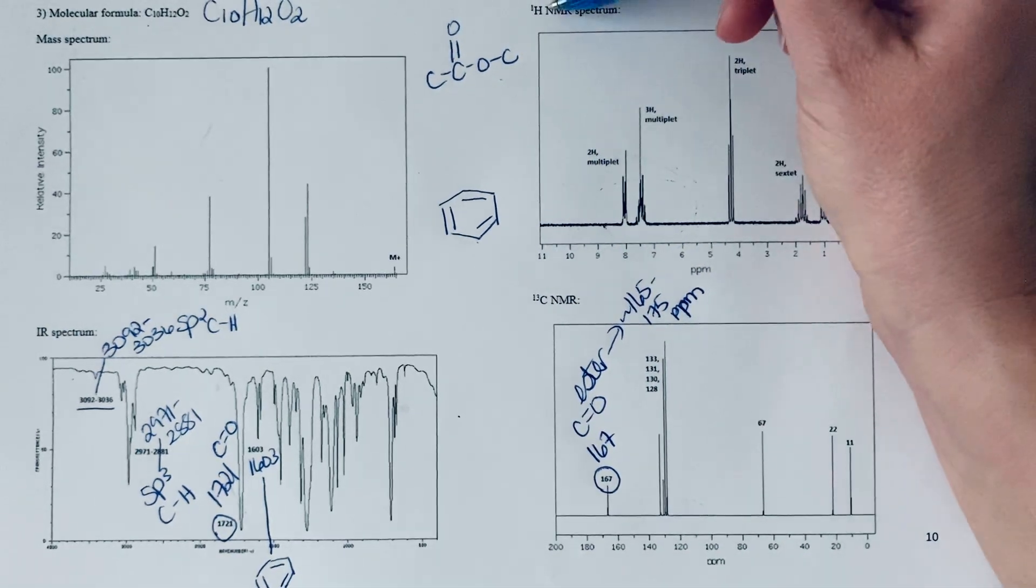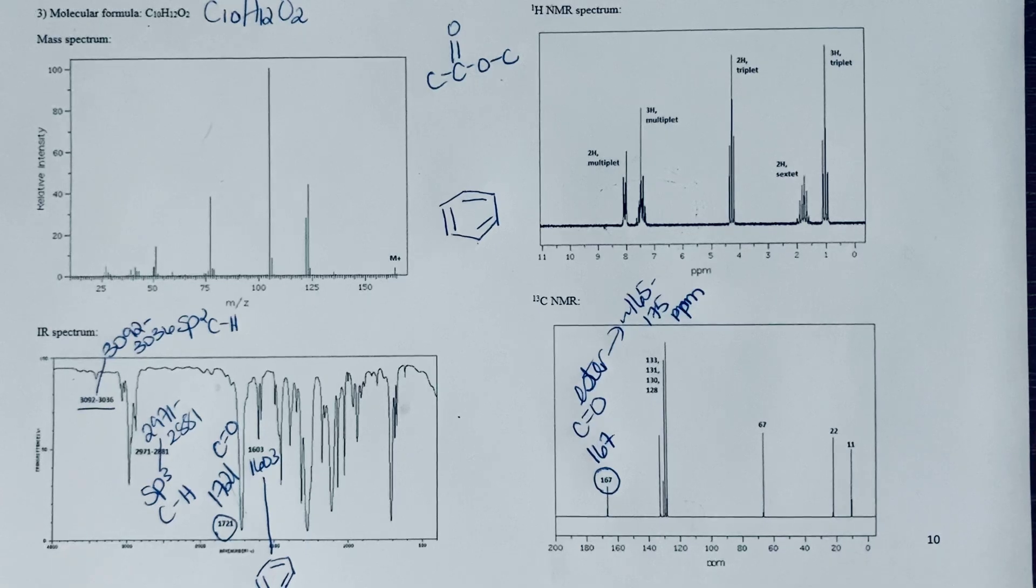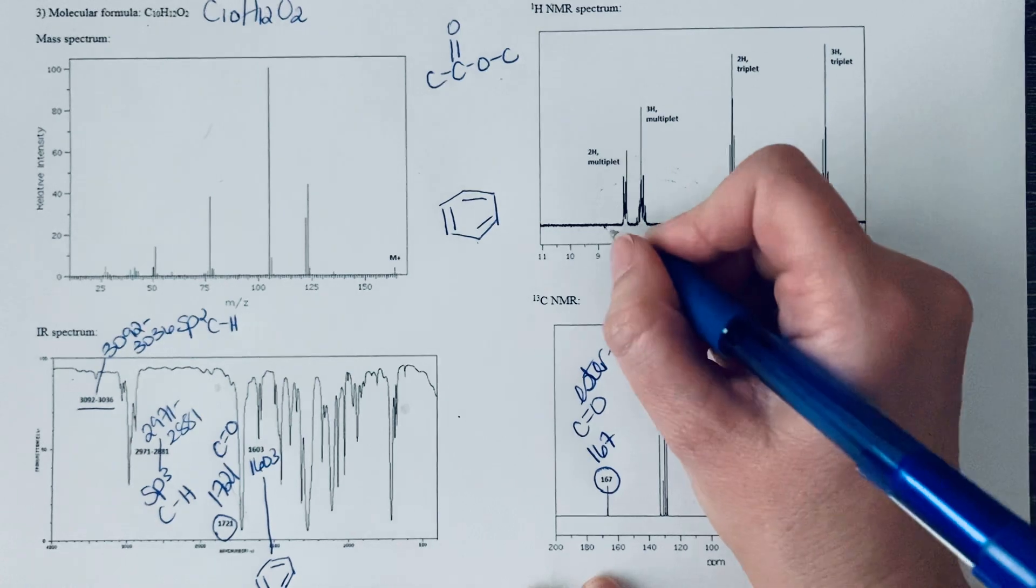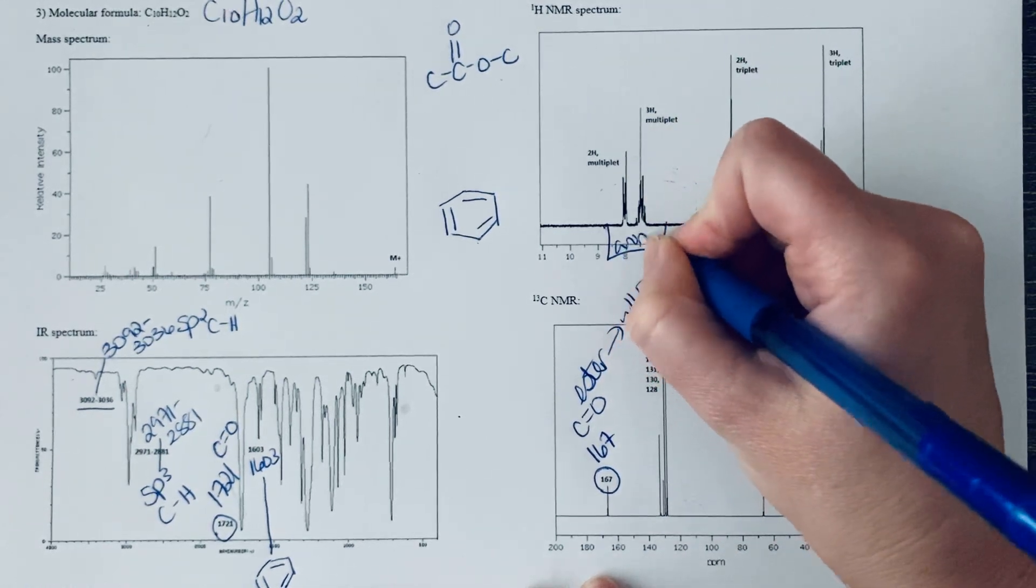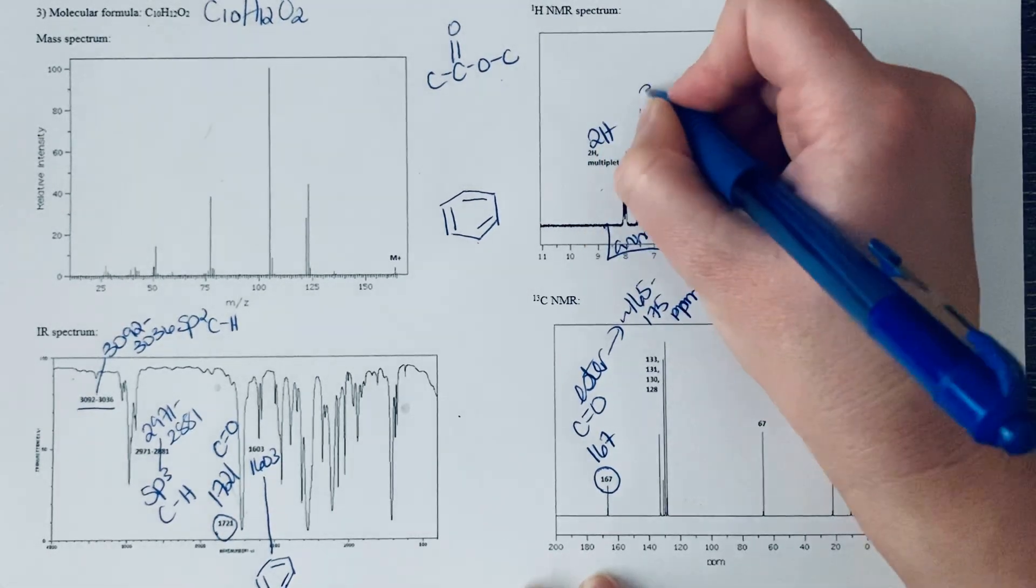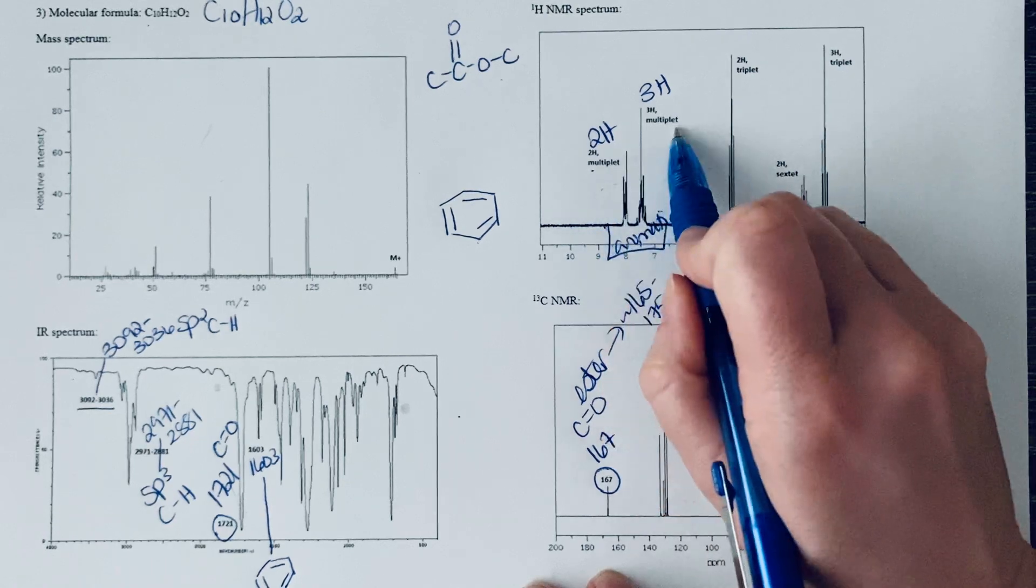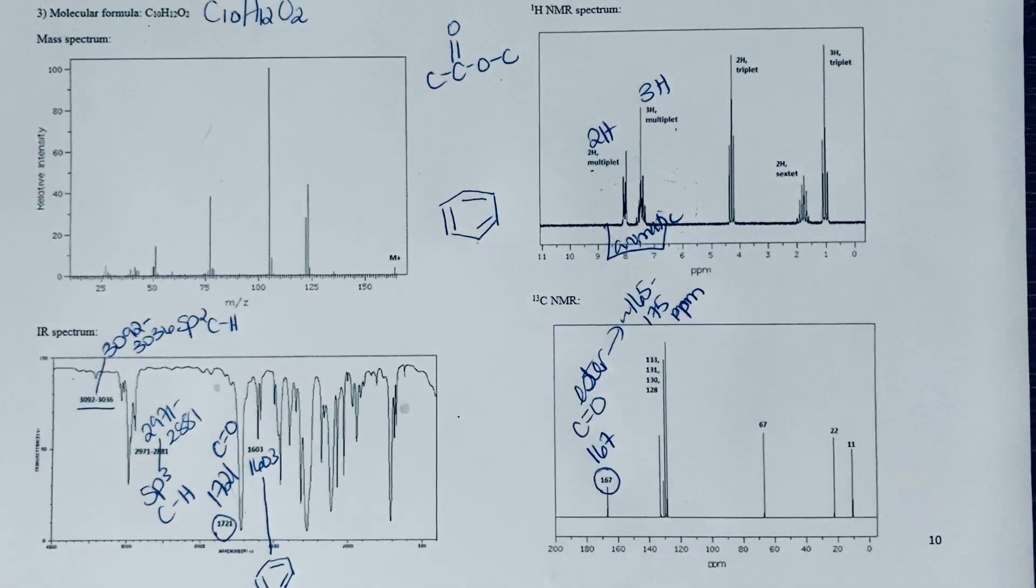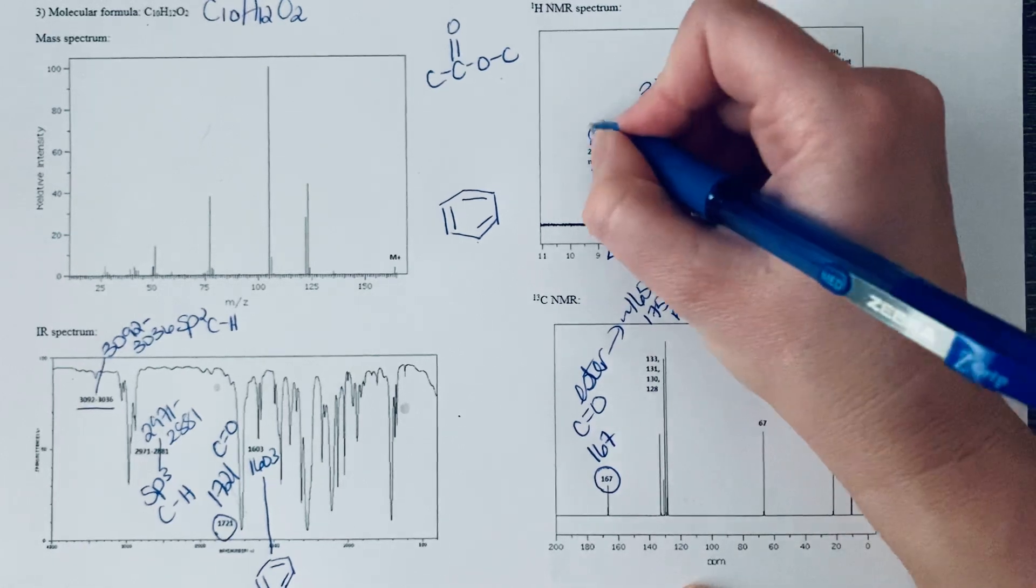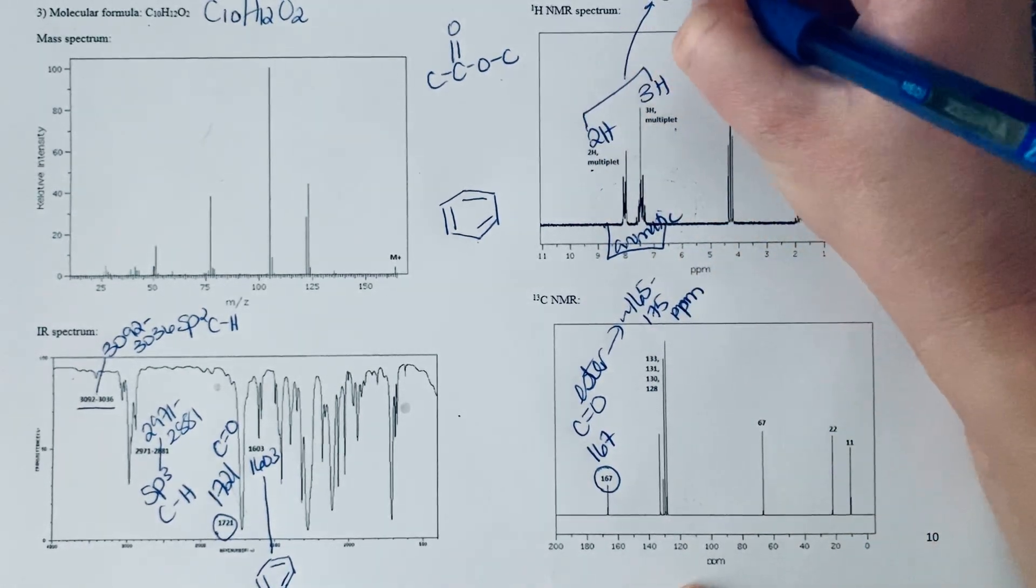Let's look at this proton NMR. One of the first things I would want to know is about what kind of benzene ring we have. Here's our aromatic region: I have a two hydrogen signal and a three hydrogen signal, both multiplets. This tells me that they have neighbors. I use this information to say I have a total of five aromatic hydrogens.